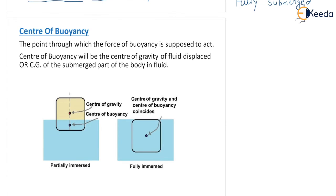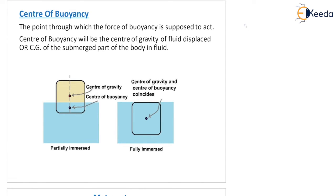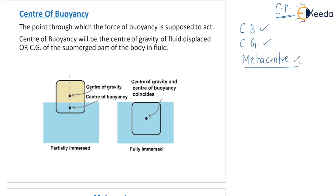We will go to the next page: Center of Buoyancy, Cb, center of gravity, and metacenter. These three points are very important for this chapter. Center of pressure was a concept in chapter 3 hydrostatics — in this chapter there is no link with center of pressure. Center of Buoyancy is defined as the point through which the force of buoyancy is supposed to act. Center of Buoyancy will be the center of gravity of the fluid displaced, or the CG of the submerged part of the body in fluid.